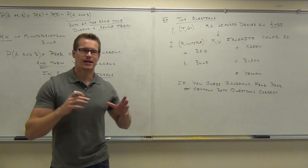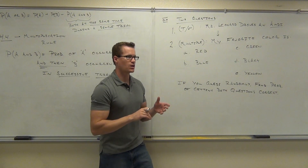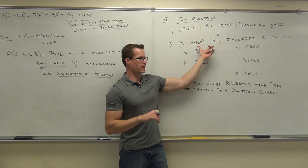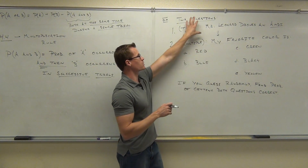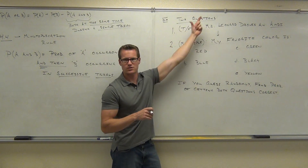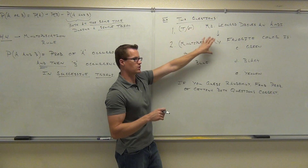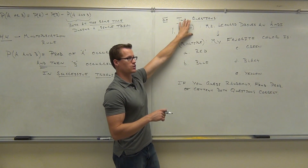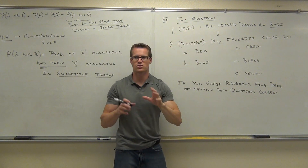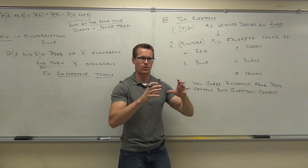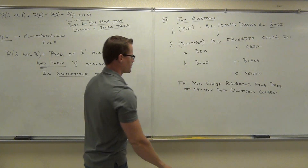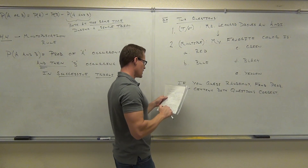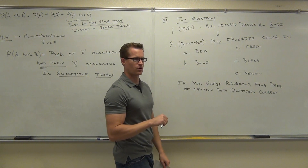Notice that we are not in the addition rule any longer. I'm not asking what's the probability of getting either this one right or this one right — I'm not asking that. What I'm asking is: find the probability that you're going to get this one right and then you're going to get this one right too. Notice how we're talking about successive events, one right after another. That tells you we are in an 'and' type of probability — we want the first one right and then the second one right.